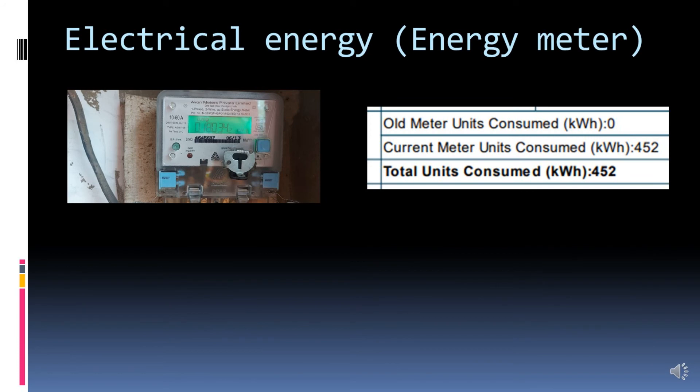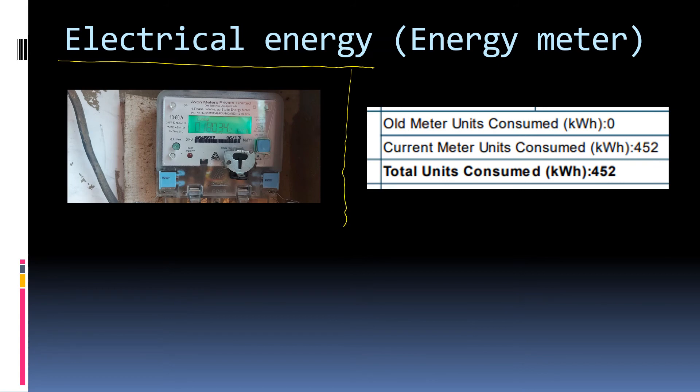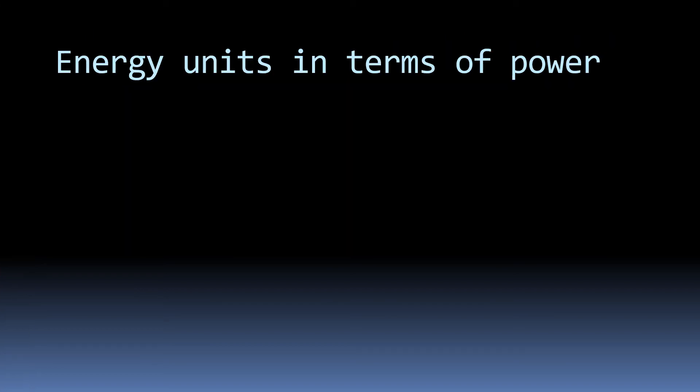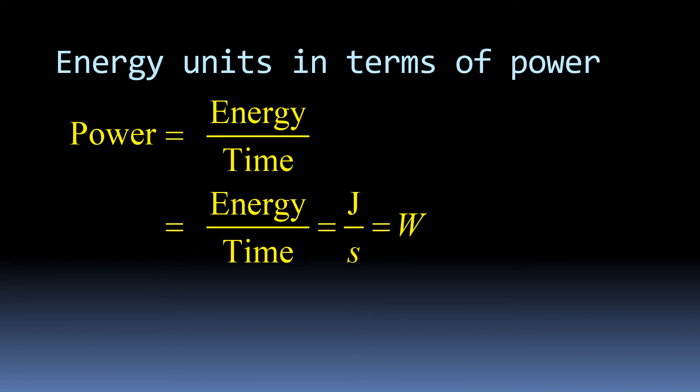Next form of energy we are going to discuss is electrical energy. You must have seen these meters in your home. Do you know what these meters are called? These are called energy meters. Have you seen or paid attention to the unit consumed while paying your bill? These units are in kilowatt hour. Kilowatt hour is a unit of energy. We need to know what is power to understand these units. How is power defined? It is energy per unit time. That is energy which is consumed in a certain amount of time.